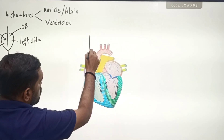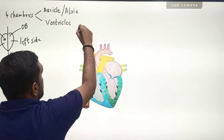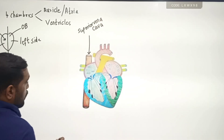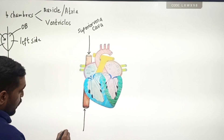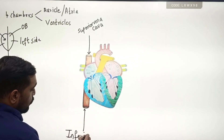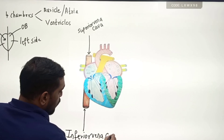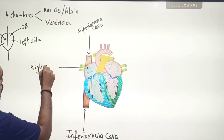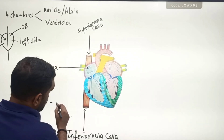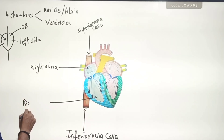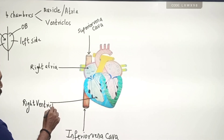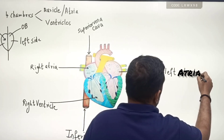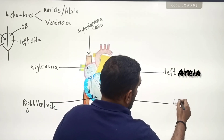This vessel brings deoxygenated blood from the upper part of the body towards the heart — it is called the superior vena cava. This one brings deoxygenated blood from the lower part of the body to the heart — it is called the inferior vena cava. This is the right atria, also called the right auricle. This is the right ventricle, which receives deoxygenated blood from the right atria. This is the left atria or left auricle, and this is the left ventricle.